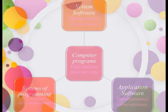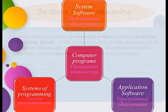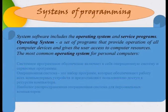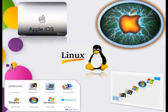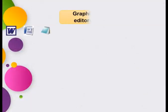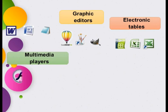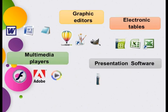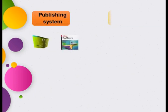Computer software includes computer programs, systems of programming, and application software. System software includes the operating system and serialized programs. The operating system is a set of programs that provide operation of all computer devices and give the user access to computer resources. Popular systems include Linux, database access tools like MySQL, enterprise programs, utility programs, text editors, graphic editors, presentation editors, and more.